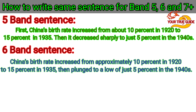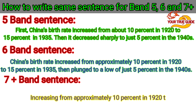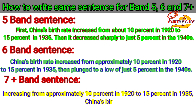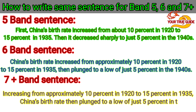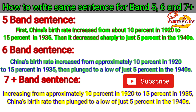Now see, for the same sentence, how we can get 7 plus bands. For 7 plus band we can write: 'Increasing from approximately 10% in 1920 to 15% in 1935, China's birth rate then plunged to a low of just 5% in the 1940s.'